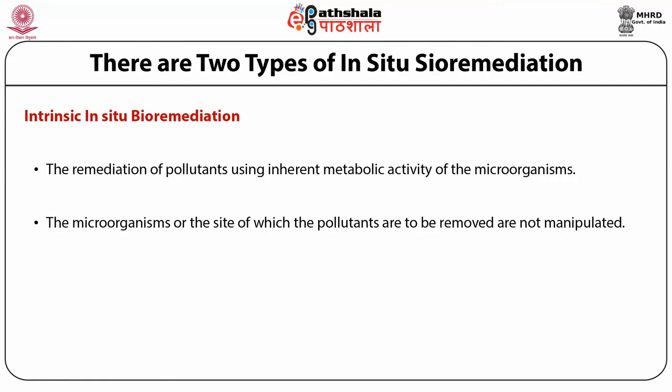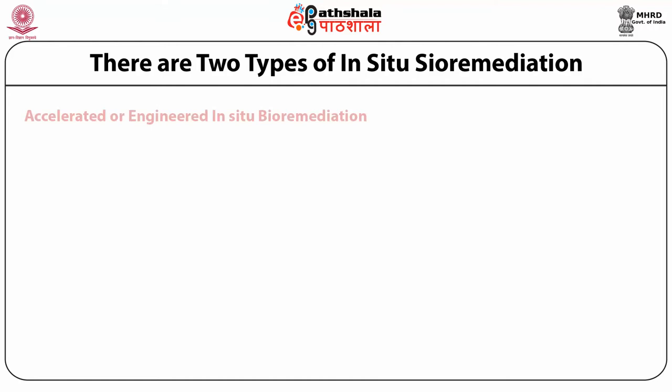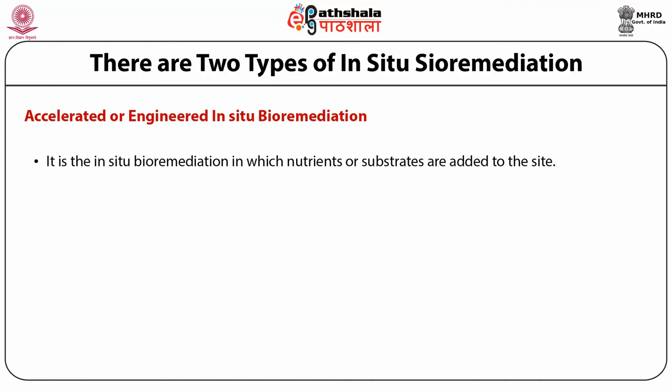However, the microorganisms or the site from which the pollutants are to be removed are not manipulated. The second procedure is accelerated or engineered in-situ bioremediation, in which nutrients or substrates such as oxygen, lactate, nitrate, etc. are added to the site, or the environment is modified to stimulate the growth of microorganisms to increase the rate of degradation. The microorganisms that are highly efficient at degrading the pollutants may be introduced at the site. The accelerated in-situ bioremediation is used where it is desired to increase the rate of degradation, and the microorganisms may be genetically modified.